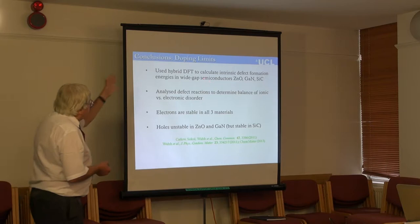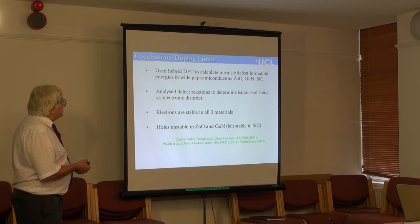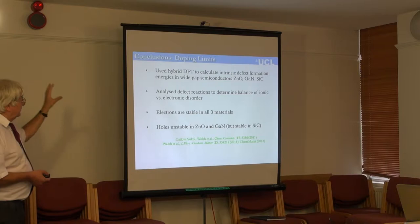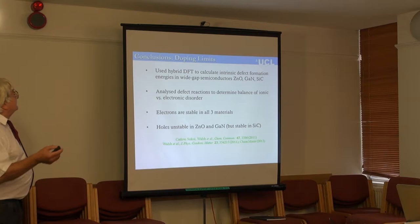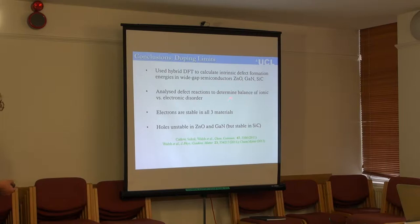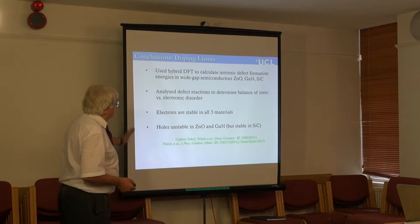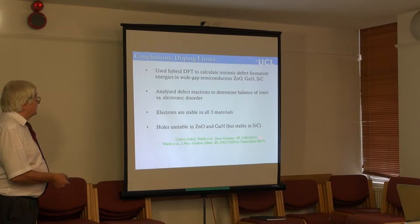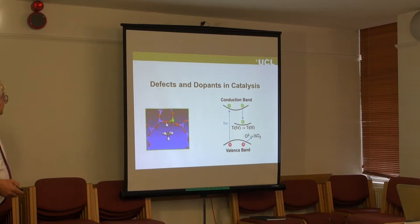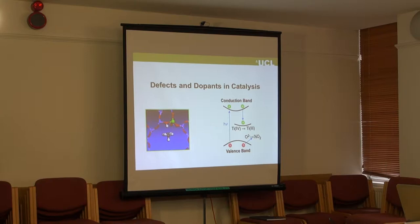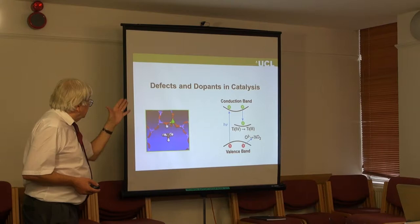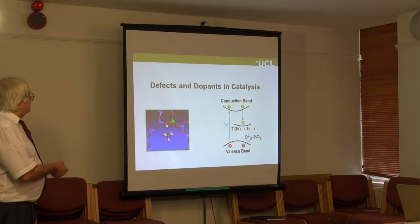The conclusion to this work is that with these hybrid embedded cluster calculations, we can do a good job calculating defect formation energies — Patrick made a big contribution to this area 40 years ago. We can use these to determine the balance between ionic and electronic disorder. Electrons are stable in all three materials, but holes are unstable in zinc oxide and gallium nitride, helping us understand a very deep literature on these systems.